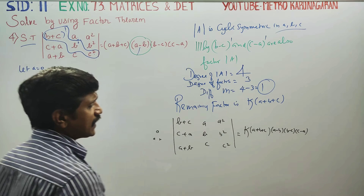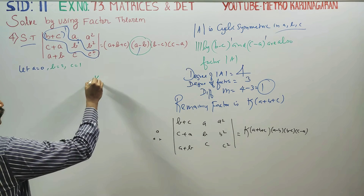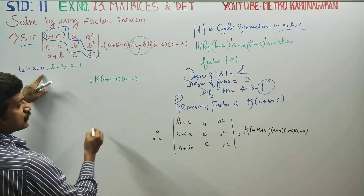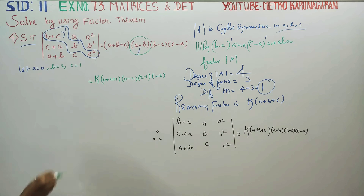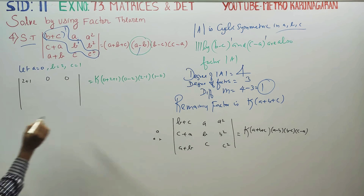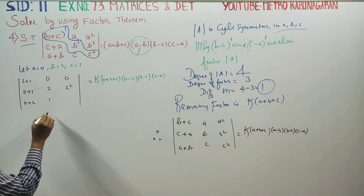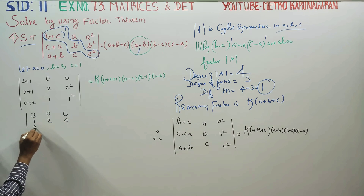With a=0, b=2, c=1, substitute into the determinant. B+C = 3, A = 0, A² = 0; C+A = 1, B = 2, B² = 4; A+B = 2, C = 1, C² = 1. So the matrix becomes the 3×3 determinant with rows [3, 0, 0], [1, 2, 4], [2, 1, 1].